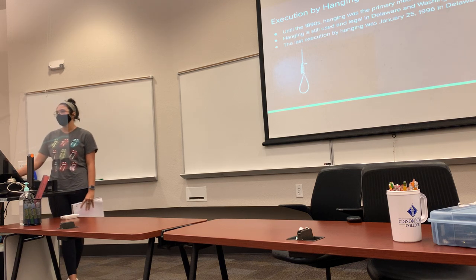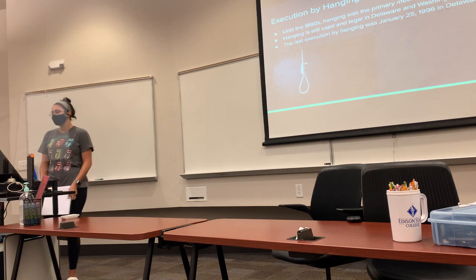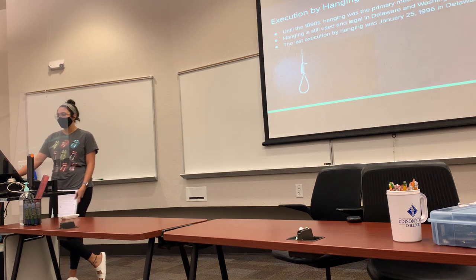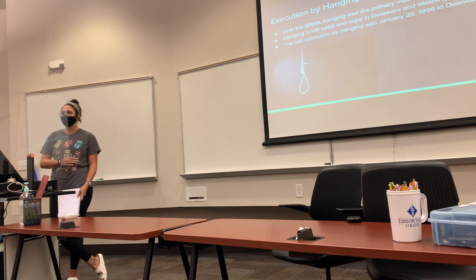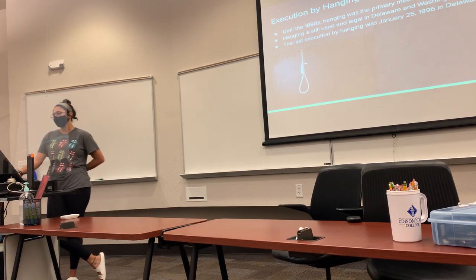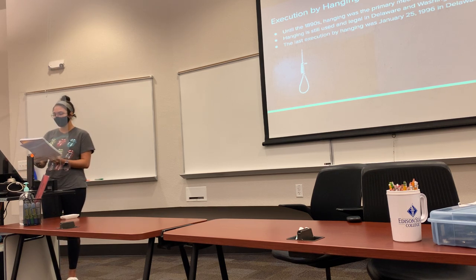The next is execution by hanging. Until the 1890s, hanging was the primary method of execution in the U.S., with some being public and some occurring within prisons. Hanging is still used and legal in Delaware and Washington, though they lean more toward lethal injection first. The last execution by hanging was January 25th, 1996 in Delaware.